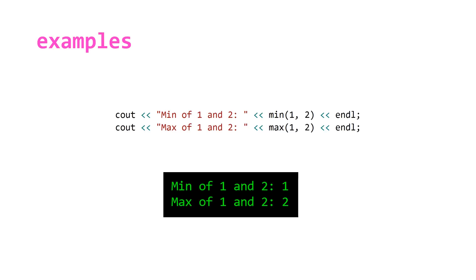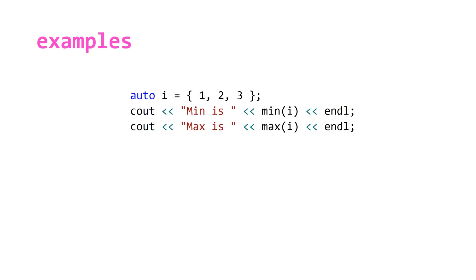Moving on, there is a version of these two algorithms that takes an initializer list. I wasn't aware of these versions but they do exist. I'm not sure why, because typically you don't want to write code like this. If you use auto and braced initialization, this will deduce to an initializer list which you can then pass to min and max. So the following code will output the following.